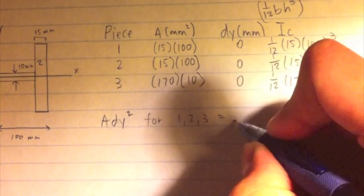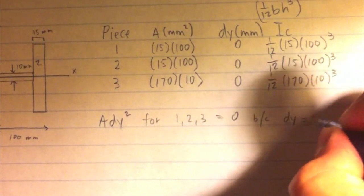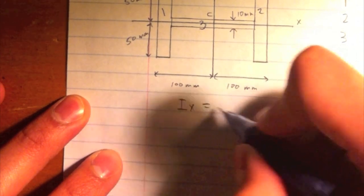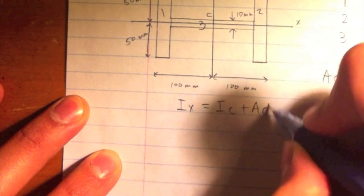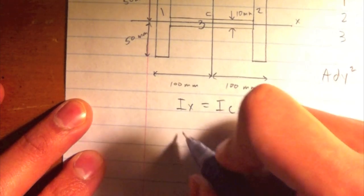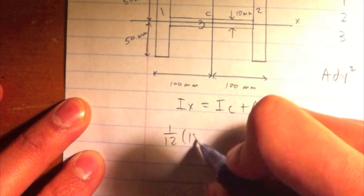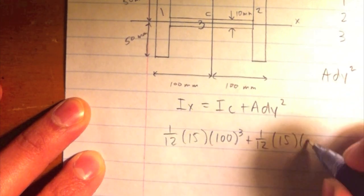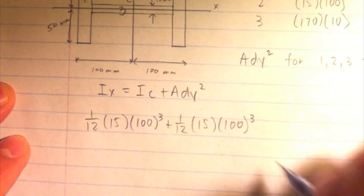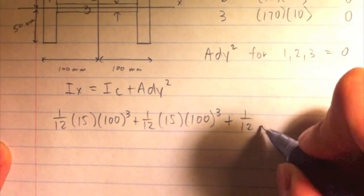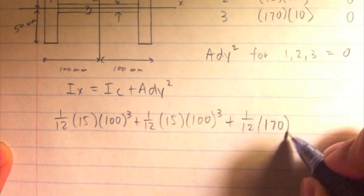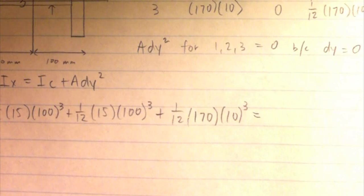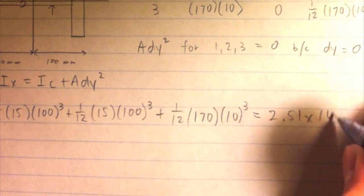So we can move right along to finding the final moment of inertia for the cross section of this beam around the x-axis, which can be found using the formula I sub x equals the sum of the three moments of inertia around the centroids of each piece plus A dy squared, which we already stated will be zero for all three pieces. To find the final moment of inertia around the x-axis, we will take the moment of inertia for each piece around its own centroid and sum them. We get 1/12 times 15 times 100 cubed plus 1/12 times 15 times 100 cubed plus 1/12 times 170 times 10 cubed, which gives us a final answer of 2.51 times 10 to the 6th millimeters to the 4th.